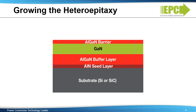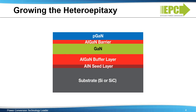One common method for making GAN transistors includes an additional GAN layer grown on top of the AL-GAN barrier, doped with P-type impurities, such as magnesium or iron. By adding this doped layer, the structure can be used to create an enhancement mode transistor.